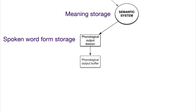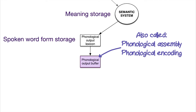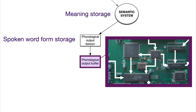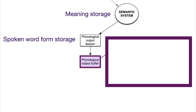After the phonological output lexicon, we move to the phonological output buffer — also called phonological assembly or phonological encoding depending on which model you're looking at. Sometimes it's separated into more than one step, and realistically there are probably lots of things happening in this one box. For the purposes of a speech pathologist, it's fine to bind that into just the one box. What's probably happening in here is firstly a buffer that holds the phonemes temporarily — the representation of that word — while it assembles the information.